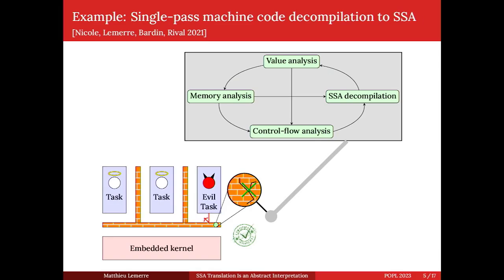Another application — the original motivation for this work — is machine code decompilation to SSA. SSA decompilation is a kind of SSA translation but instead of starting from a high-level language like C, you start from machine code. Because it's a low-level language you cannot do syntax-directed translation; you must do an analysis. We simultaneously do SSA decompilation, value analysis, memory analysis, and control flow analysis — solving the chicken-and-egg problem by doing all analyses at the same time. We have applied this to verify properties of microkernels directly from machine code.